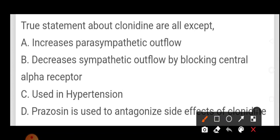True statements about clonidine are all except: increases parasympathetic outflow, decreases sympathetic outflow by blocking central alpha receptor. If it decreases sympathetic outflow, means increase in parasympathetic outflow, used in hypertension.